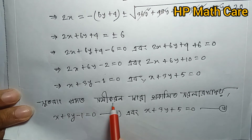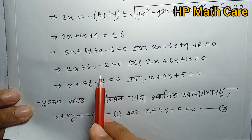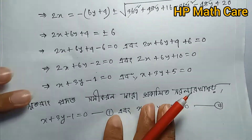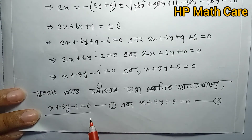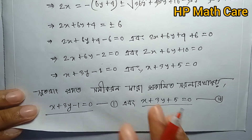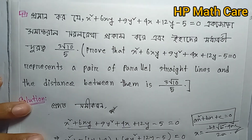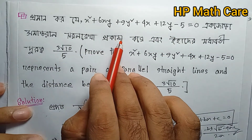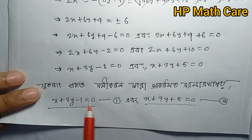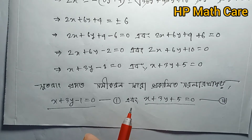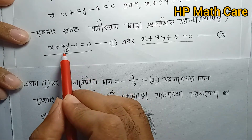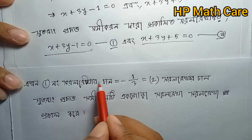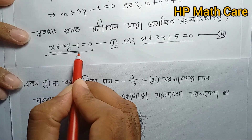Now we need to find the distance. The two lines are parallel, so we apply the distance formula between parallel lines. The show — our current calculation — requires identifying the coefficients carefully. We have x plus 3y minus 1 equals zero and x plus 3y plus 5 equals zero.